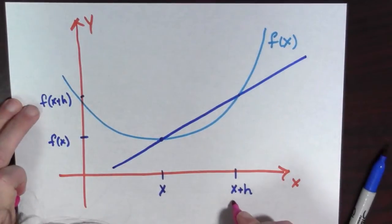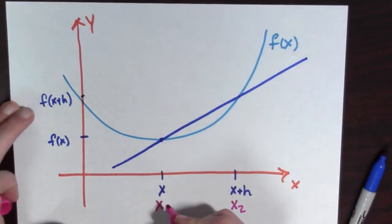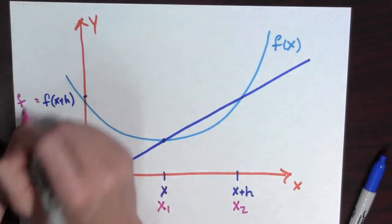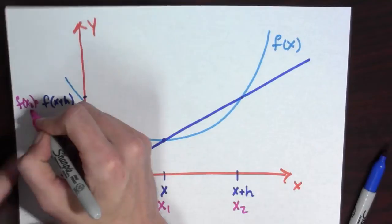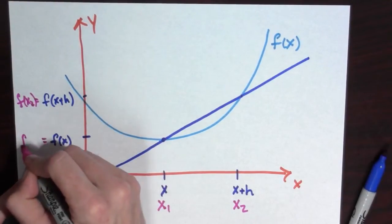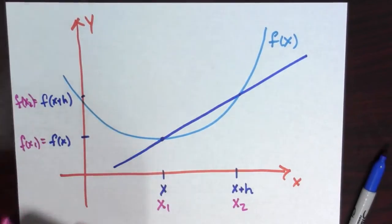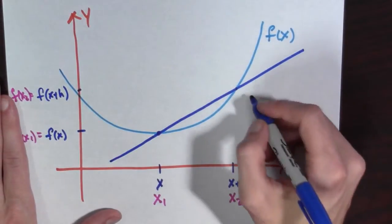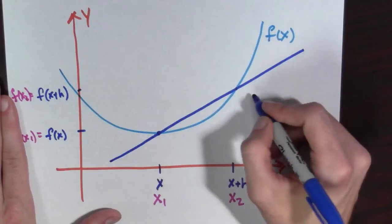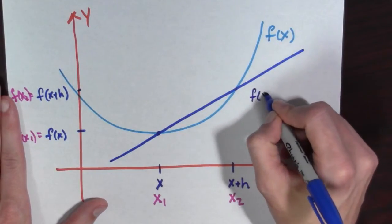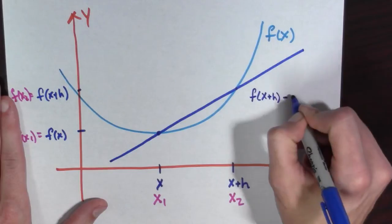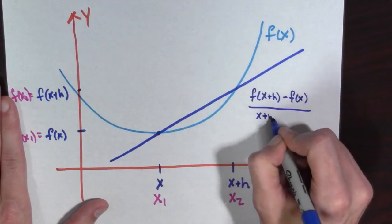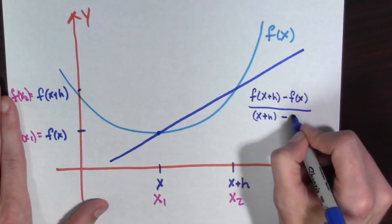here we do x2, x1. And this is equal to f of x2. And this is equal to f of x1. And so all we're doing is we're computing the slope. And so the slope of this line is going to be f of x plus h minus f of x all over x plus h minus x.